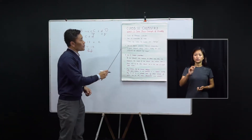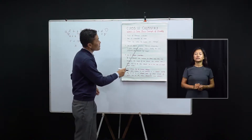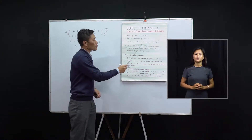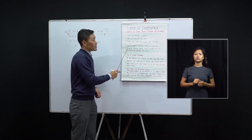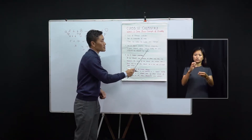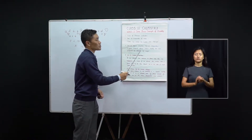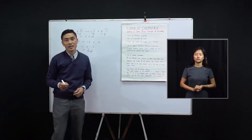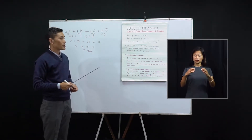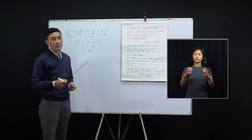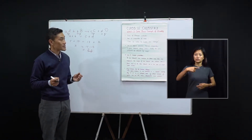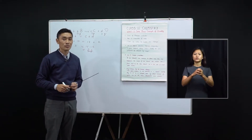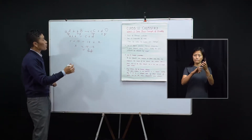The second law is the law of definite proportions, or definite composition. This law states that a given compound always contains exactly the same proportion of elements by weight. This means that if we have the same chemical compound, no matter from what source we obtain it, it will always contain the same elements combined in a fixed ratio by mass. Let us see another example to understand this law.